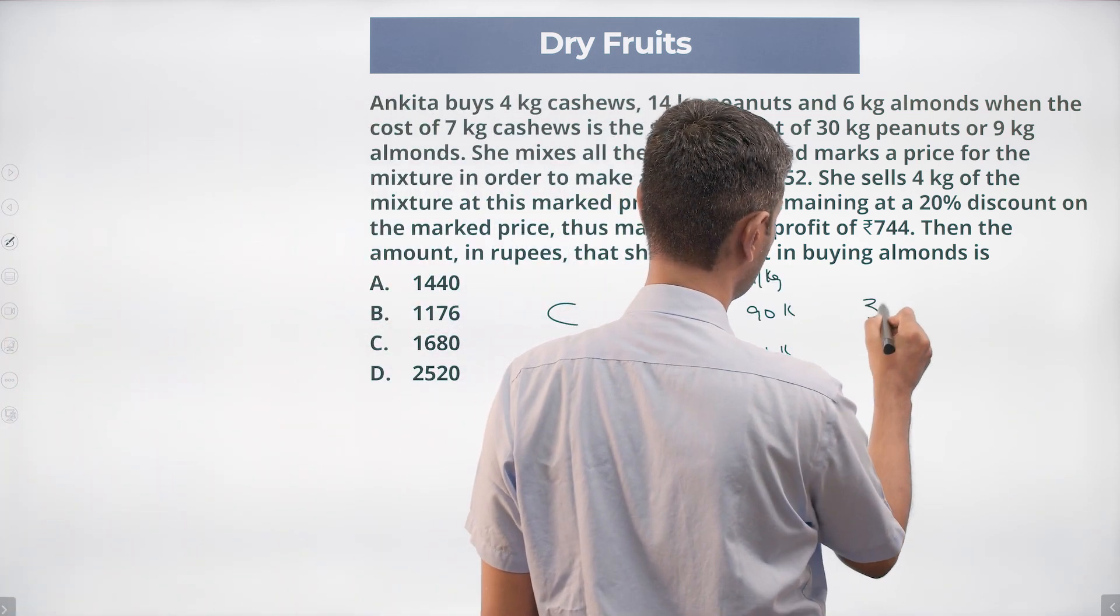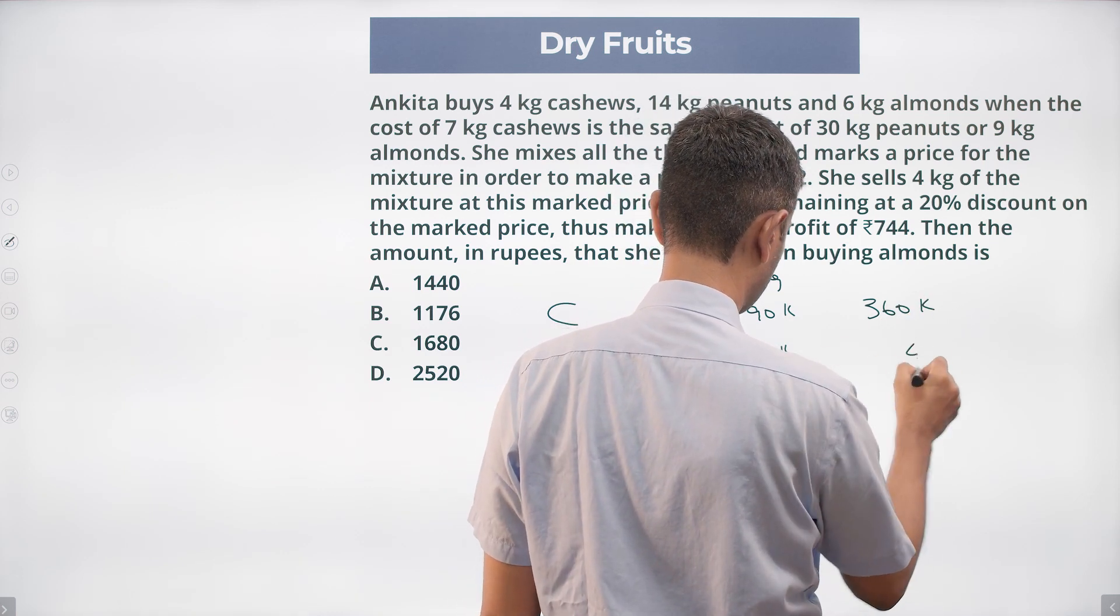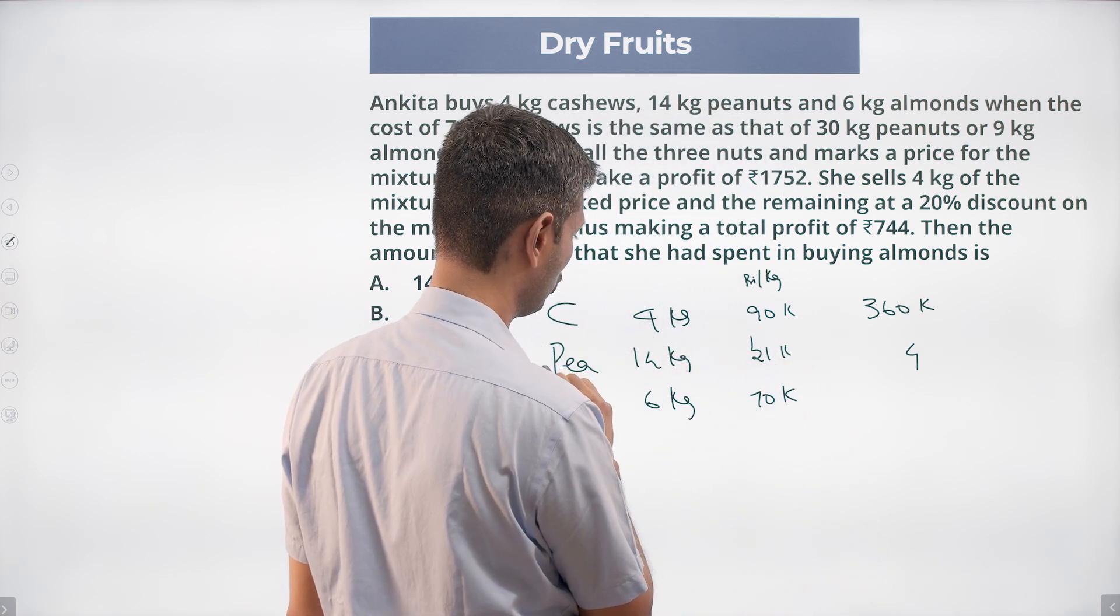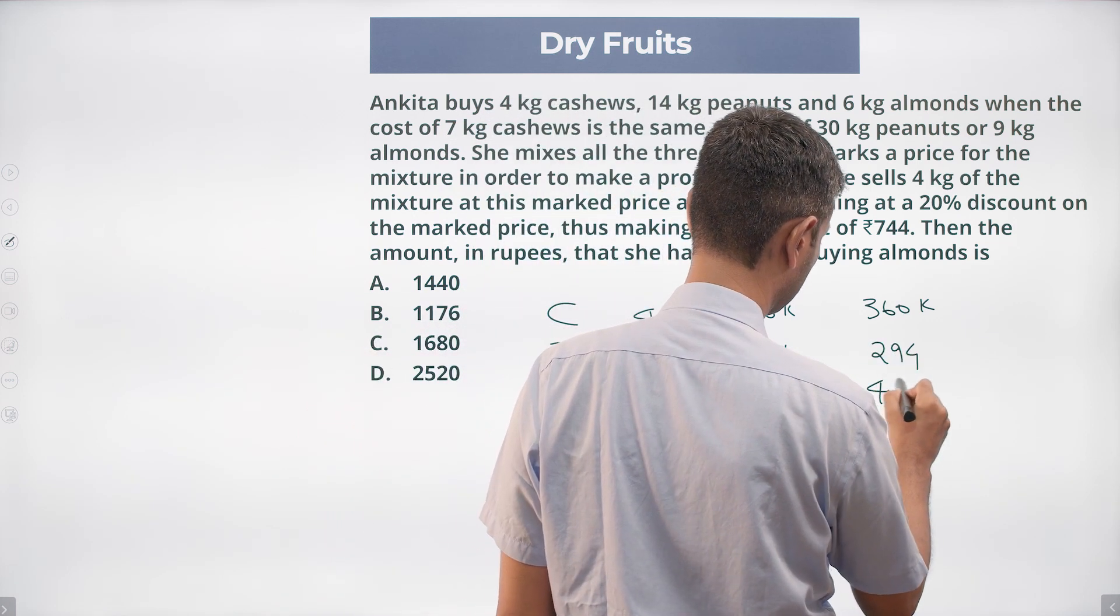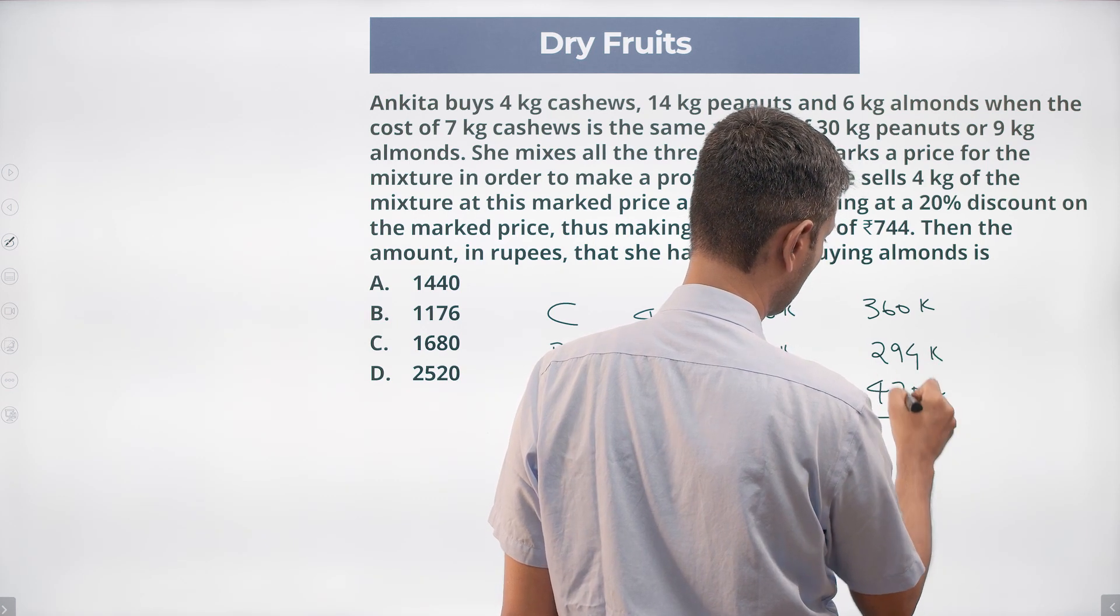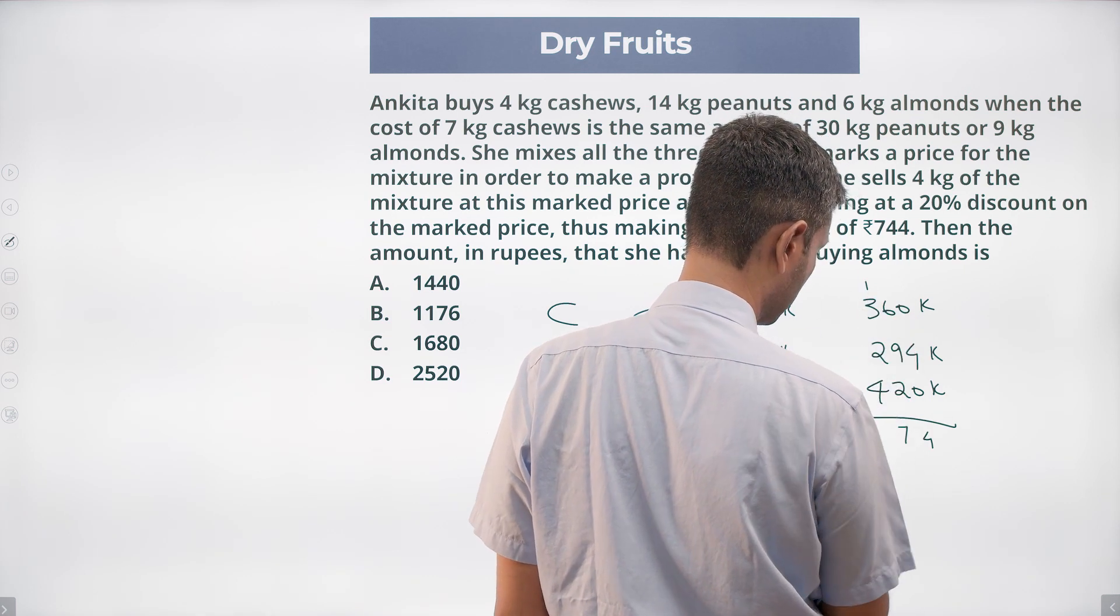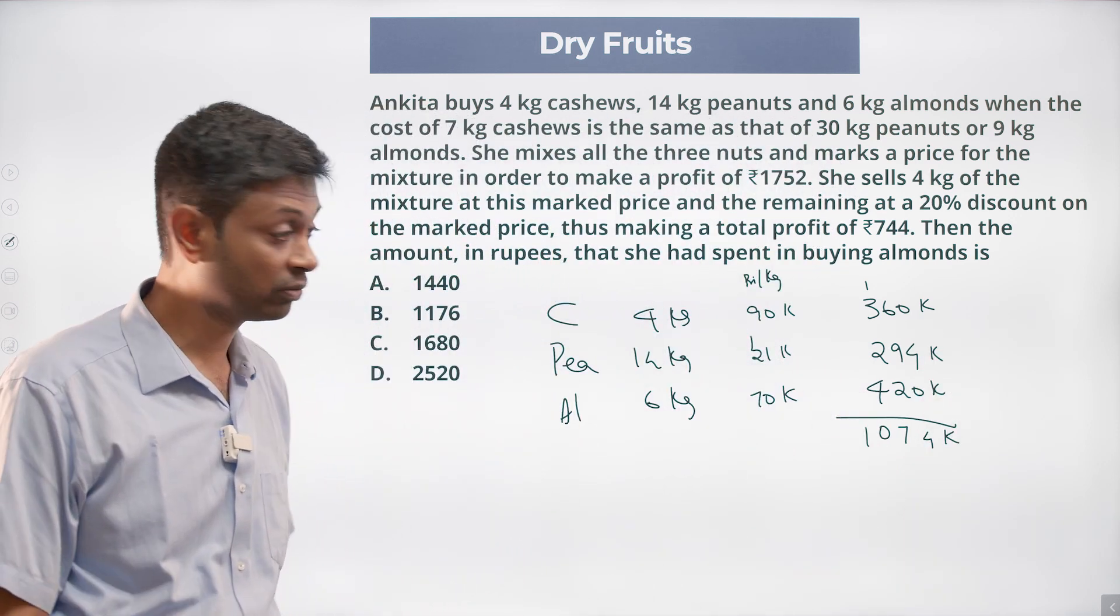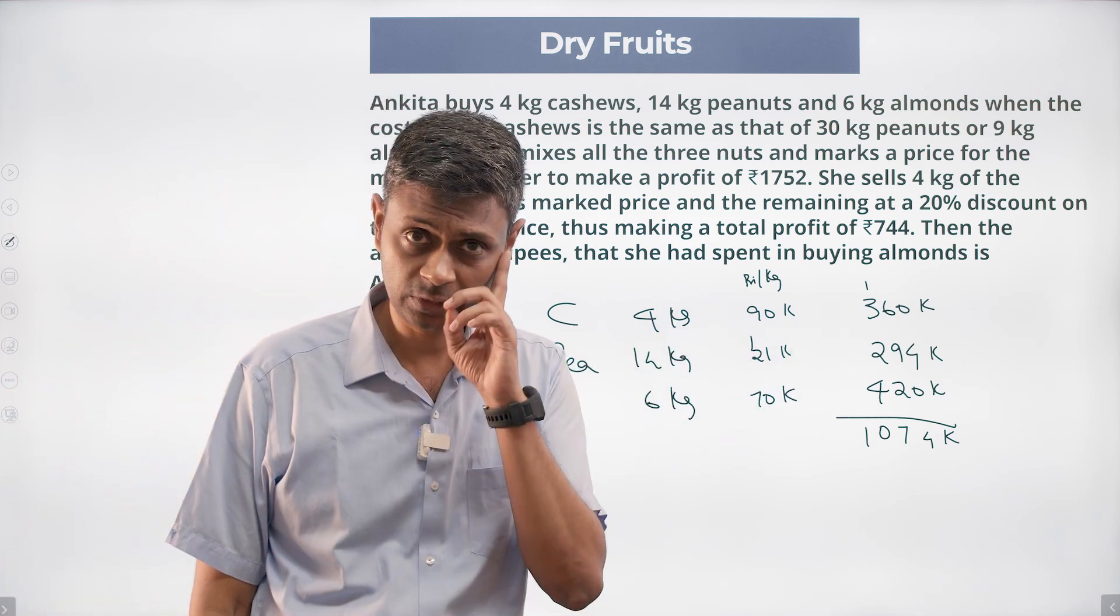So how much does she spend? She spent total of 360K. Fourteen into twenty-one, 14 twos are 28, 294, this is 420. We add these three, this is 411, 617, 710. Four plus two six plus four ten, 1074K. That's the total amount of money she spent, of which almonds alone is 420.